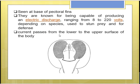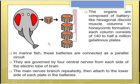The current passes from the lower to the upper surface of the body. The electric organs are composed of battery-like hexagonal discoid muscle columns, which look like honeycombs. Each column consists of around 140 to half a million gelatinous plates. These honeycomb-like batteries are connected as a parallel circuit, as Narcine is a marine fish.